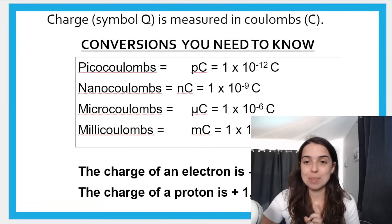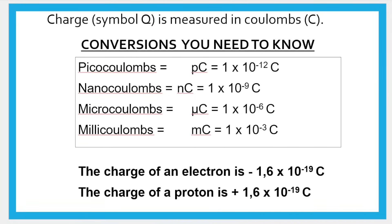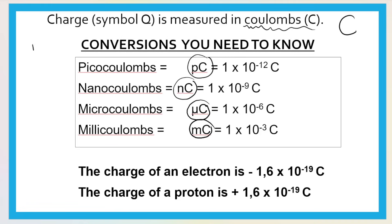One thing you do need to memorize are the conversions. Charge is what electrostatics is all about. Charge is measured in Coulombs — big C — that is the unit of measurement. However, sometimes the charge is very tiny, so we don't use Coulombs; we use picocoulombs, nanocoulombs, microcoulombs, or millicoulombs. It's kind of like instead of meters we use millimeters or centimeters.